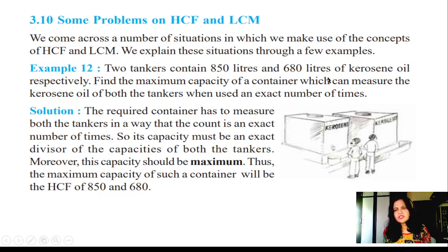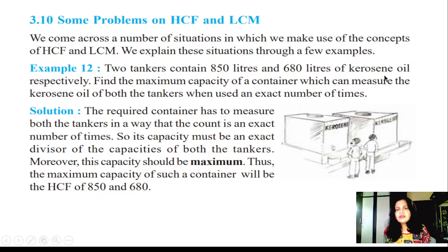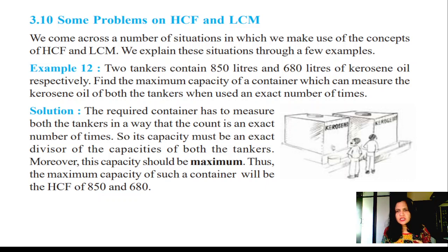The second tanker has a capacity of 680 liters of kerosene oil respectively. Find the maximum capacity of the container which can measure the kerosene oil of both tankers when used an exact number of times. We have to find the number of liters that a small container holds, and how many times we fill it to fill each big tank.